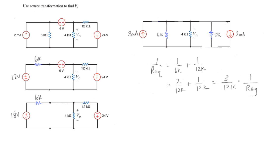Or the easy shortcut way for two parallels is 6K product over the sum times 12K over 6K plus 12K. And that's going to end up being 4000.